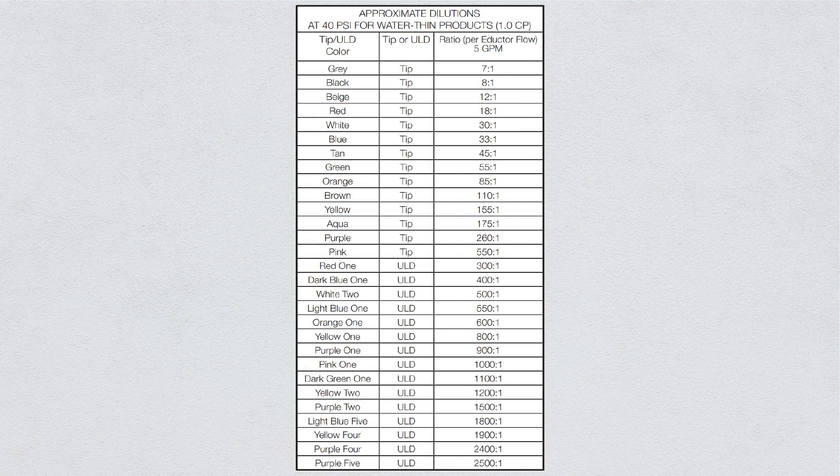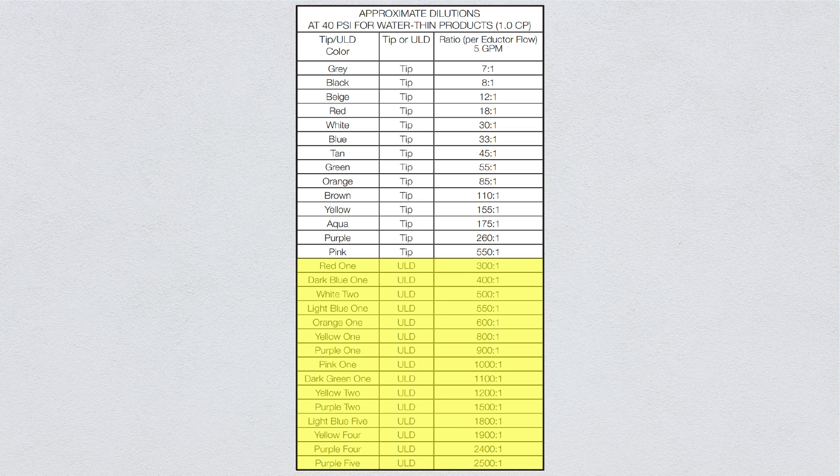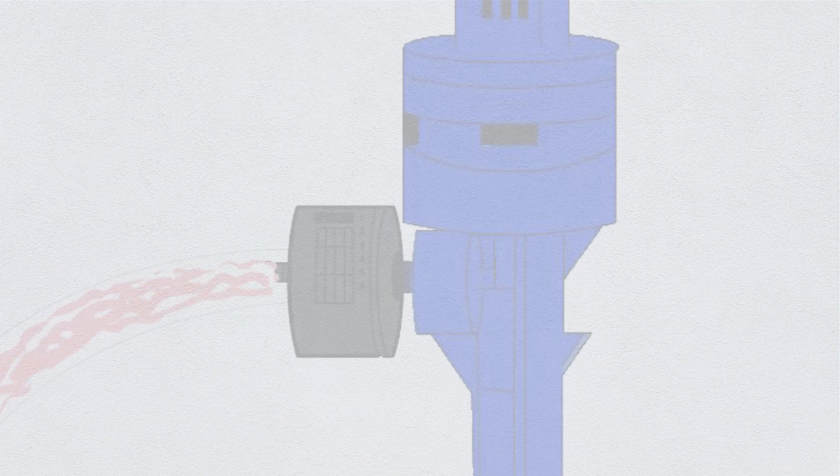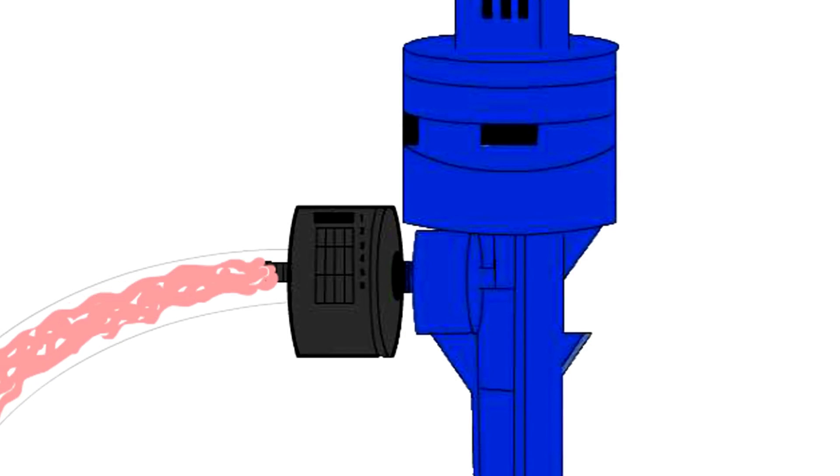Once you know the color and number of active discs, consult the chart in the datasheet that provides the corresponding dilution rate. The ULD is installed where the hose barb normally is, threaded directly on the adductor. The ULD has a built-in barb where the chemical hose is attached.